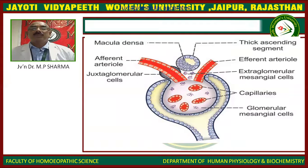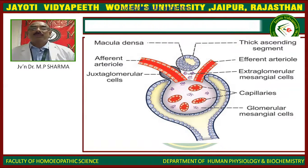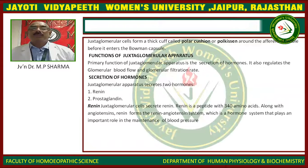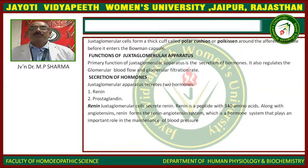See the diagram to understand about the extraglomerular apparatus. The cells form a thick cuff called polar cushion around the afferent arteriole before it enters the Bowman's capsule.